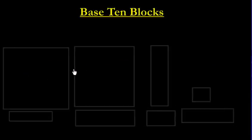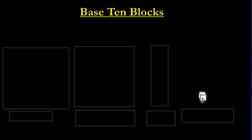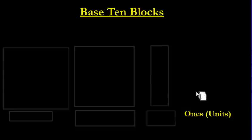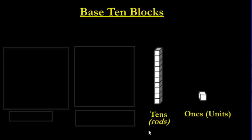Here's part two for using base-10 blocks to represent numbers. Let's start with a quick review of what these blocks look like. We have this one here — we said it was like a baby Elmo, he's so small and cute. We call these the units, the ones. Then we move on: get 10 of these stacked and we get a ten, also called a rod.